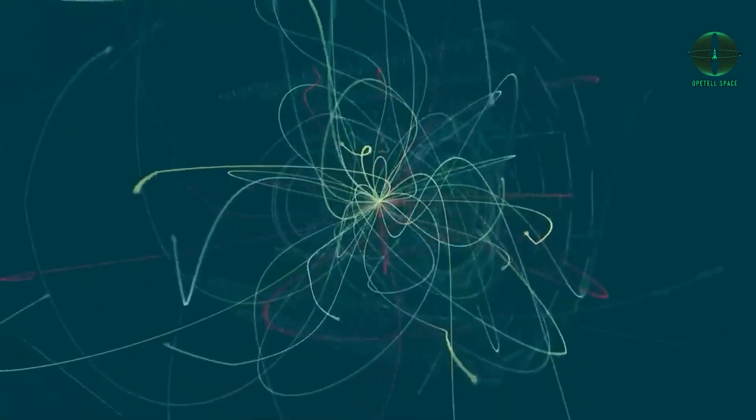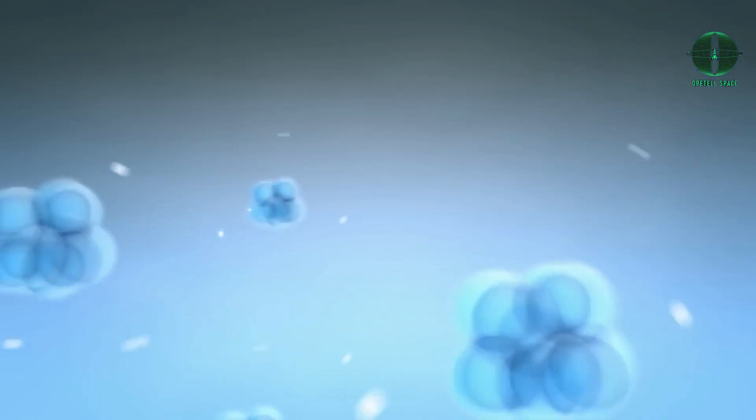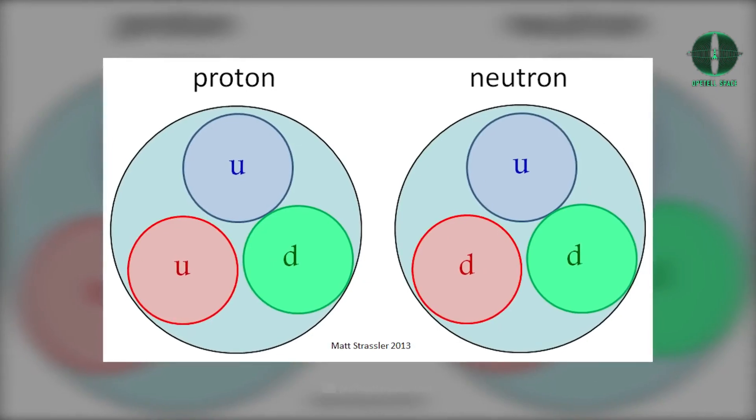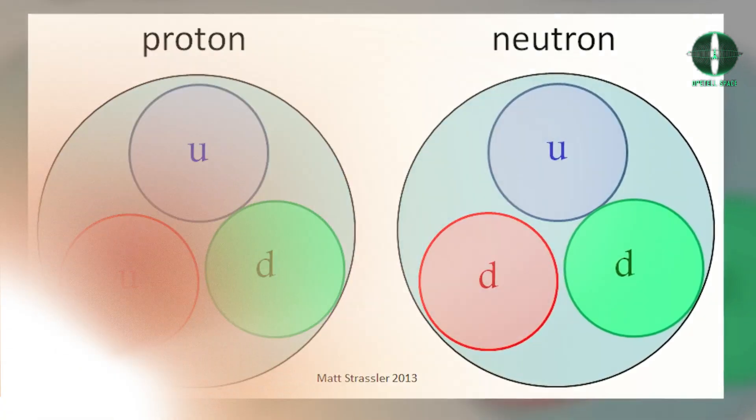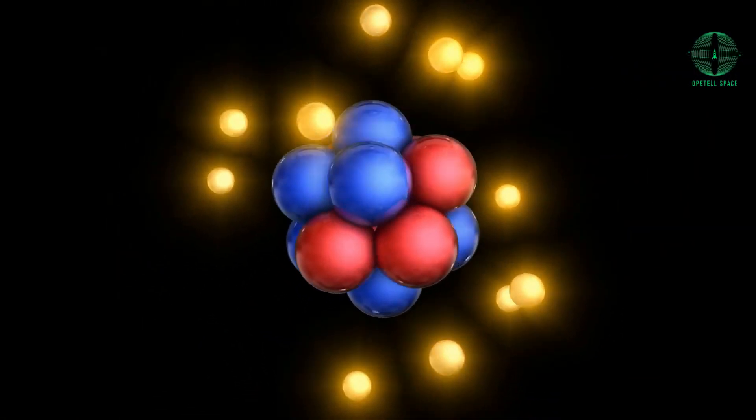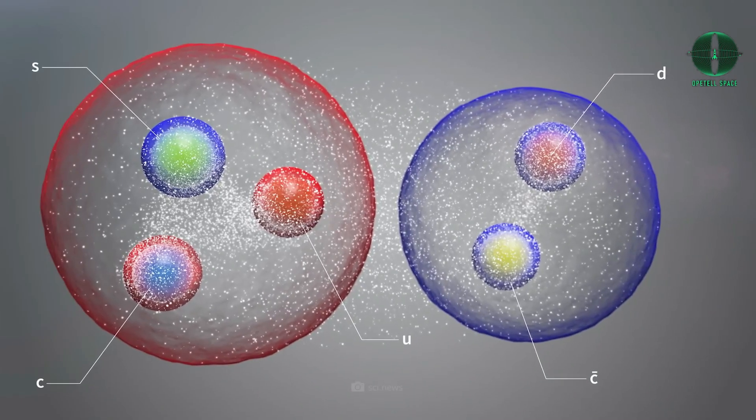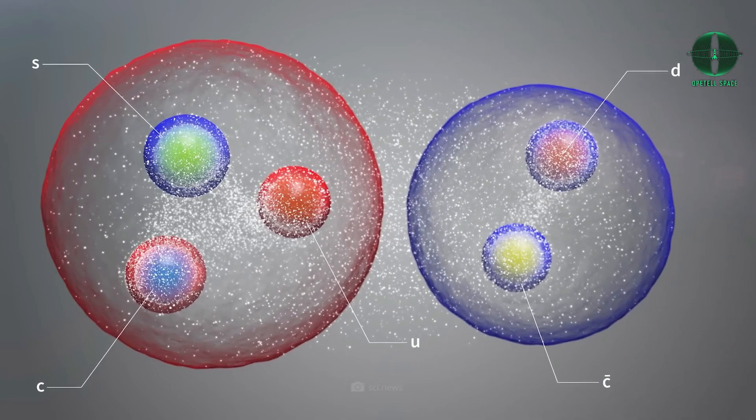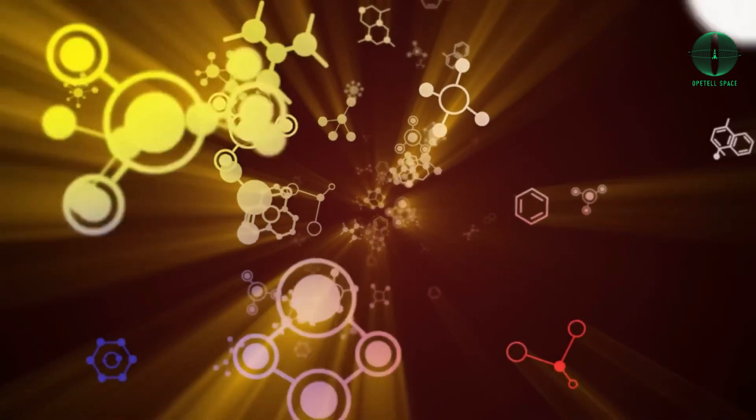In essence, quarks serve as the fundamental building blocks of matter. Simply put, they often reside within protons and neutrons, which constitute the essential components of every atom in the universe. Quark particles typically join forces to create hadrons like protons and neutrons, forming atomic nuclei in groups of two and three. Tetraquarks and pentaquarks, denoting four and five quark particles, respectively, can also amalgamate, albeit less frequently.